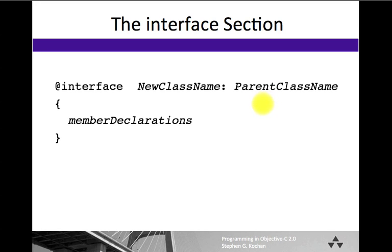After we list the parent class, we have the instance variable declarations, or what's called here the member declarations, and those are enclosed inside a pair of left and right curly braces. For each instance variable, we specify the instance variable's type and its name.